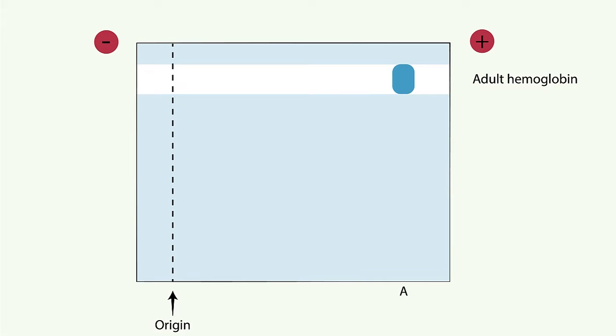Fetal hemoglobin is composed of two alpha and two gamma chains. Because the gamma chain is less negative than the beta chain, fetal hemoglobin is represented less close than hemoglobin A1.